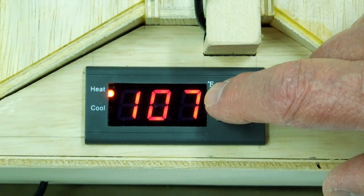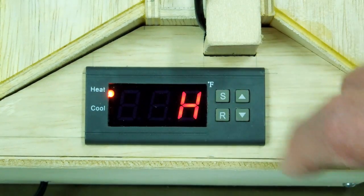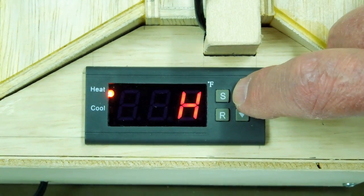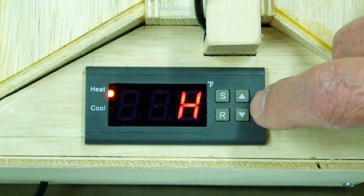If I press and hold S for a few seconds, I get to H and C. Press that again, I'm at H. Press the up button, I'm at C, back to H. H is heating, C is cooling. We're going to leave it on heating.